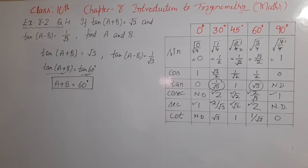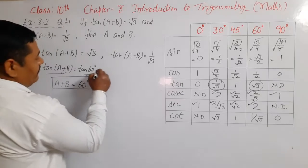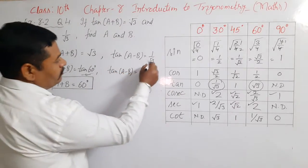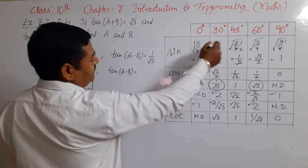Agar main kisi tarah ek aur equation bana leta hoon, same variables mein, toh main is pair ko solve kar sakta hoon. Woh equation yaha se ban jayegi. Tan(A-B) ko main likh sakta hoon. Again, yaha pe 1 upon root 3 ki value use kar sakta hoon. 1 upon root 3 is tan 30 degree.